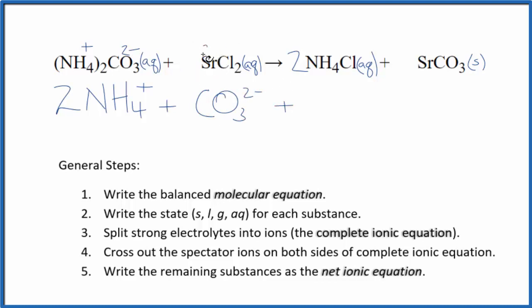Strontium is in group two on the periodic table. That's two plus. Chlorine ions, the chloride ion, one minus. So I have Sr2+. That's the strontium ion. And then we have two chloride ions, 2Cl-. So these are the reactants in our net ionic equation.